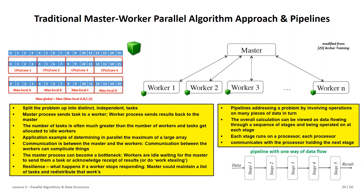One traditional approach to understanding the key essence of parallel computing is: if we want the maximum of an array with 16 elements, and we have CPUs with four cores available, we can divide the array into parallel chunks and compute the local maximum from each chunk in parallel. This is the master-worker paradigm, illustrated here with an abstract notation showing different workers computing their local results.